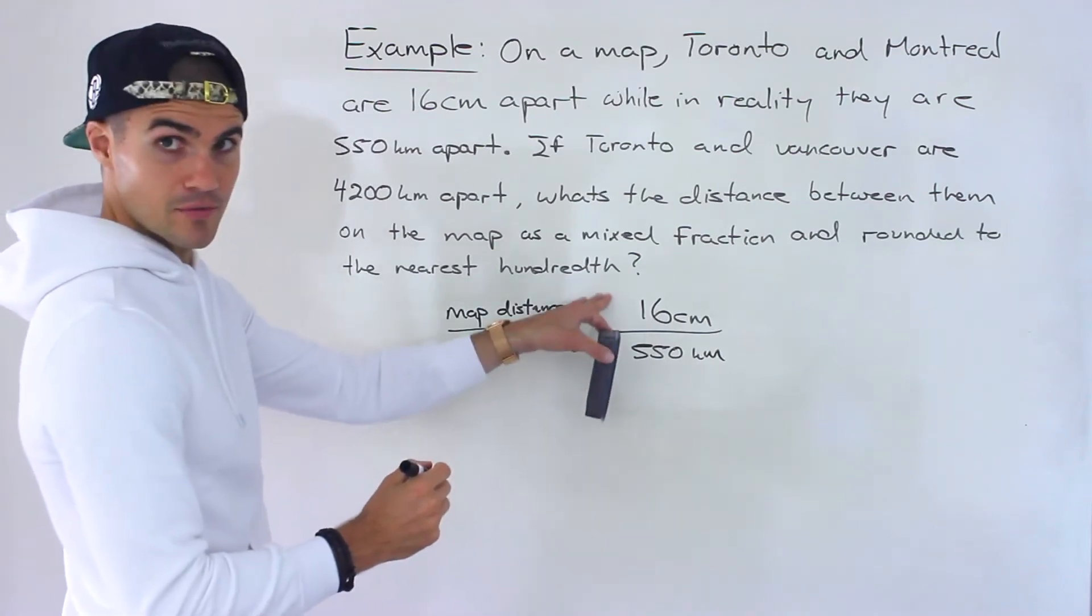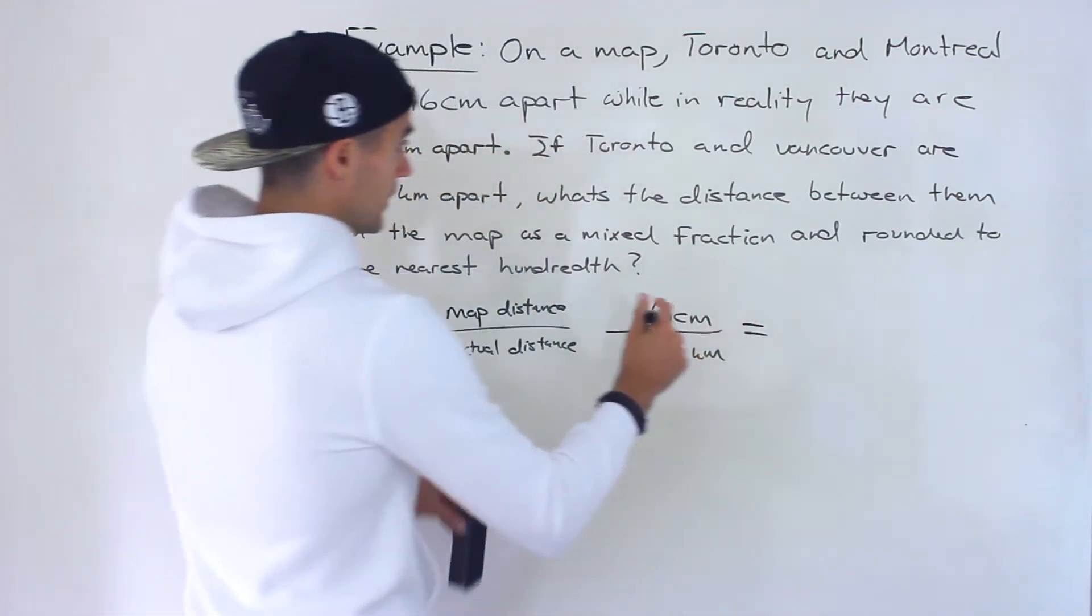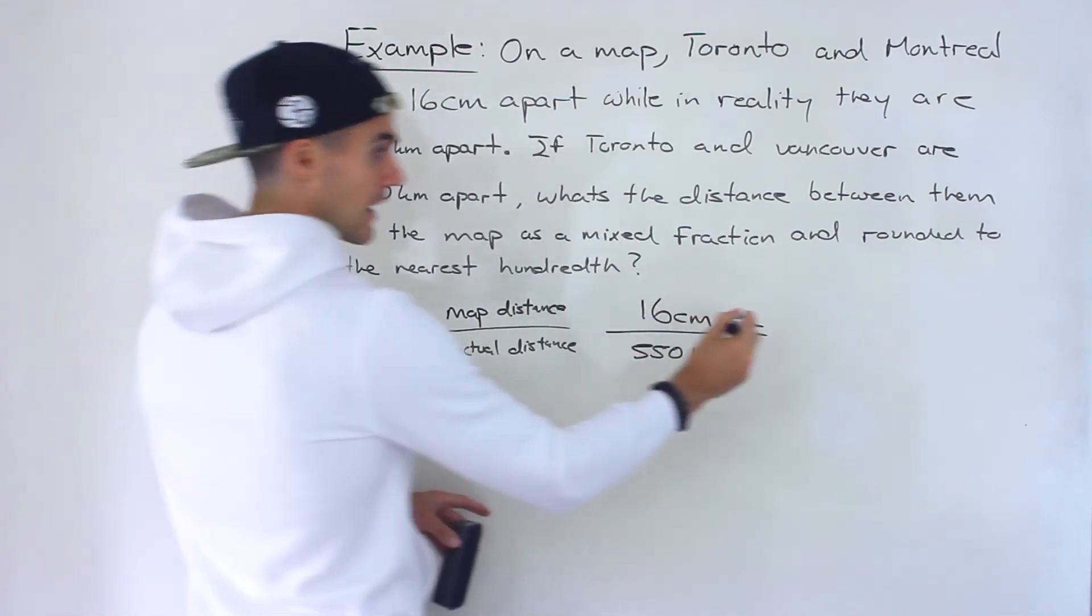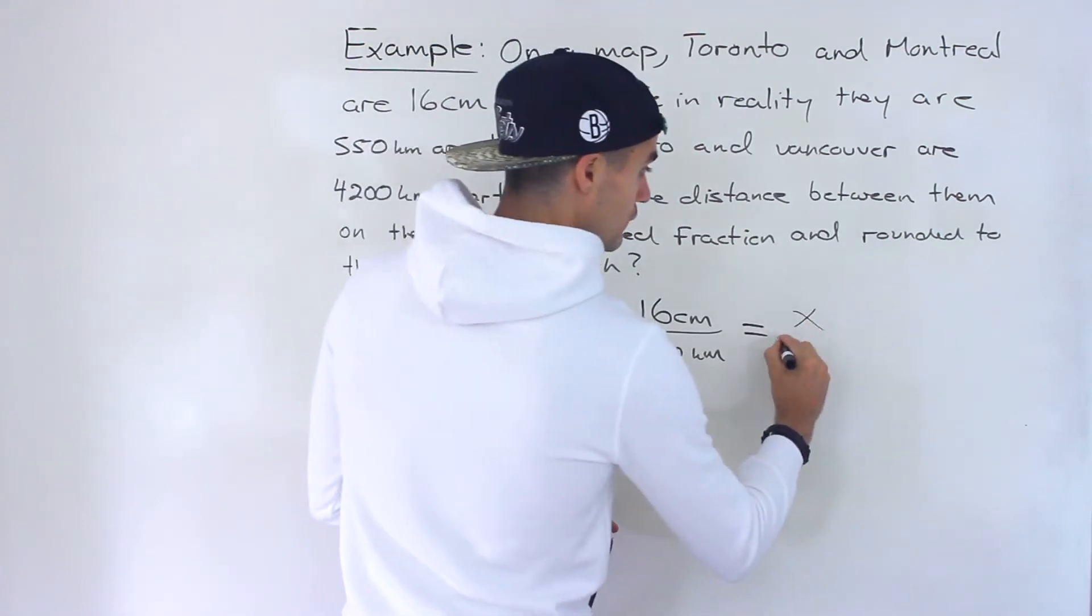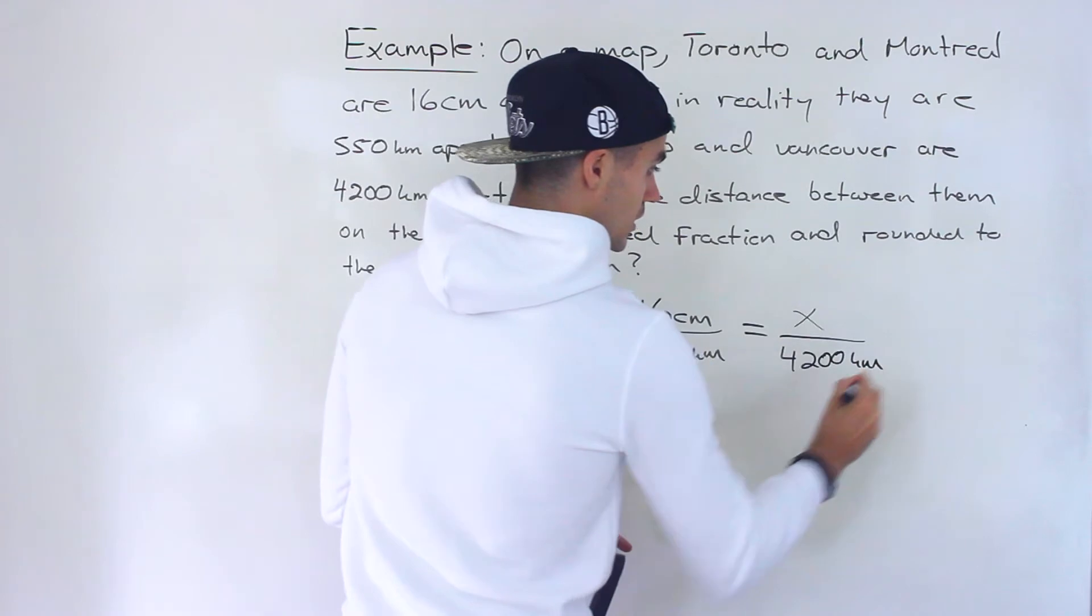And so if we could keep this right here we can figure out what's the distance between Toronto and Vancouver on the map. That's what they're asking for if they are 4,200 kilometers apart.